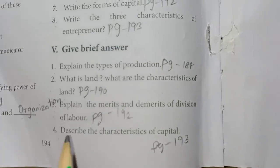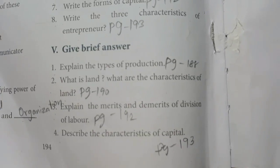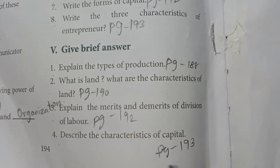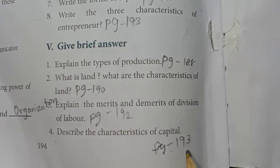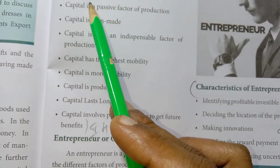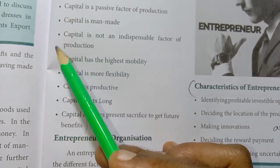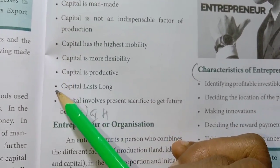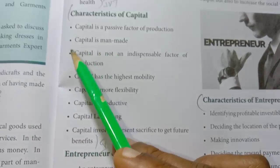Fourth one: Describe the Characteristics of Capital. Page No. 193, under Characteristics of Capital — eight points are given.